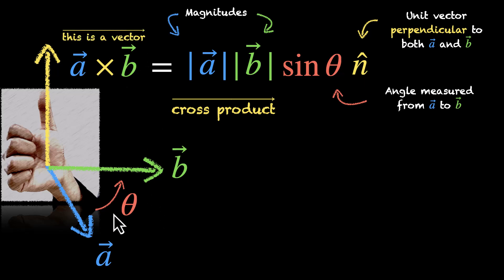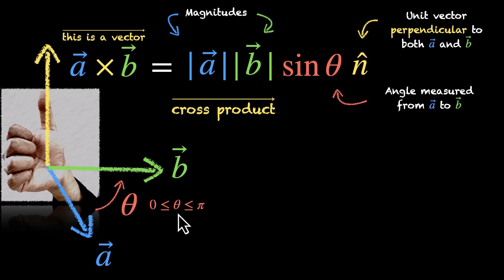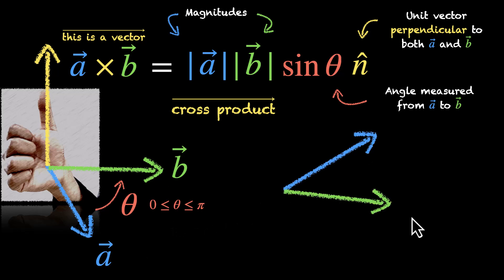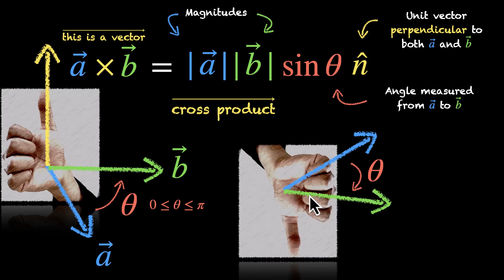One important thing about this angle theta: it ranges from 0 to pi. 0 is when a and b overlap, and pi is when a and b are facing the opposite direction. We usually don't take a negative value of theta. If a and b switch places — for example, if a is here and b is here — now if you move from a to b, you move in this direction. So theta is still positive, but your thumb is now pointing downwards, giving us the opposite direction of what we got in the previous case.